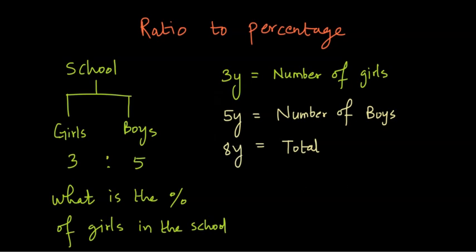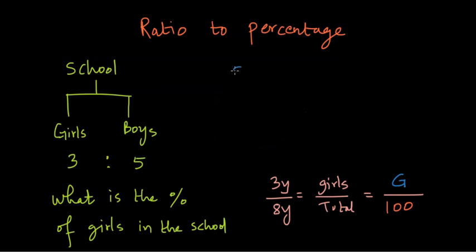And now we can go ahead and solve the percentage. So the number of girls is 3y and the total is 8y. So this is basically girls divided by total number of students. And now we can convert this into some percentage by keeping the denominator as 100. And let's keep the variable as g for the percentage of girls. This gives us 3 by 8 to be equal to g by 100 because we can cancel out y because that was just a multiplying constant.